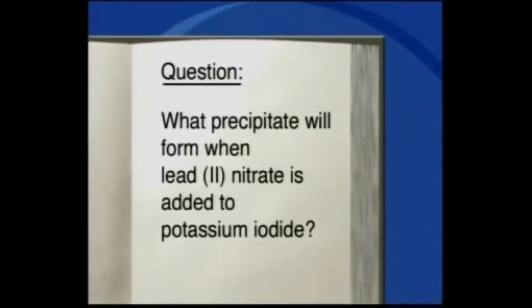Did you see that? A cloudy yellow mixture formed. After a short time, the yellow particles settle onto the bottom of the beaker. Can you work out what the precipitate is? What precipitate will form when lead nitrate is added to potassium iodide?